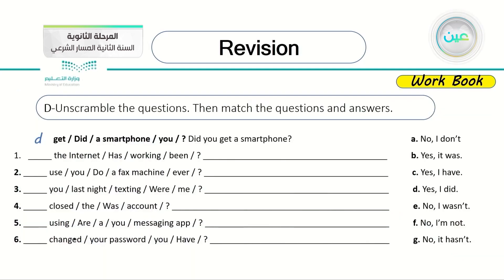The next exercise: unscramble the questions, then match the questions and answers. The first one is already done — the scrambled words 'get, did, a smartphone, you' unscramble to 'Did you get a smartphone?' — it goes with letter D, answer: 'Yes, I did.' Always begin with the auxiliary verb.